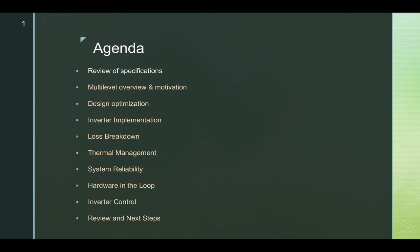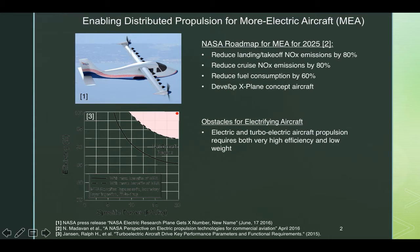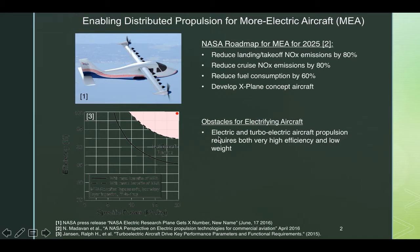In our next slide we will see that we are enabling distributed propulsion for more electric aircraft, better known as MEA. As you can see, the plane here shows the NASA roadmap for MEA for 2025. But there are obstacles that you have to consider, such as the electric and turbo-electric aircraft propulsion that requires both very high efficiency and low weight.